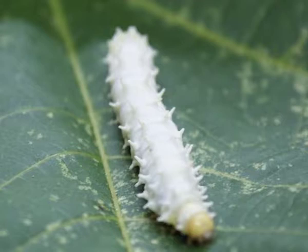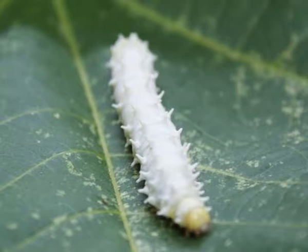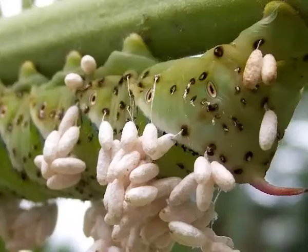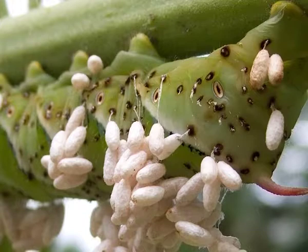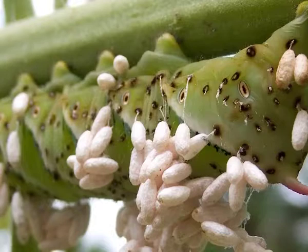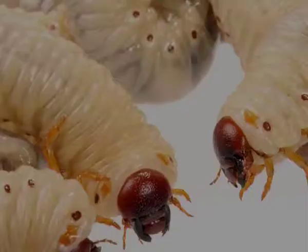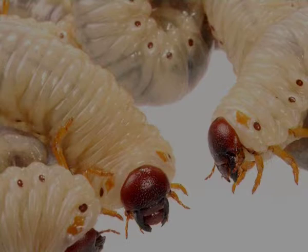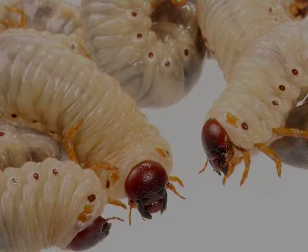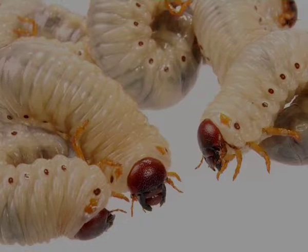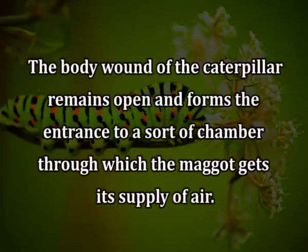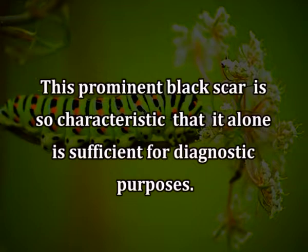Pests of eri silkworm: Eri worms attacked by the parasite Tricholega bombycis show a very prominent black scar at the point where the maggot enters the body of the caterpillar. When this parasite fly finds access to the silkworm, it lays white oval eggs on its body. The eggs are fairly large and can be seen by the naked eye. Within two days, the maggot hatches out of the egg and at once penetrates into the body, starting to feed on its substances. The body wound remains open and forms the entrance to a chamber through which the maggot gets its supply of air. This prominent black scar is so characteristic that it alone is sufficient for diagnostic purposes.